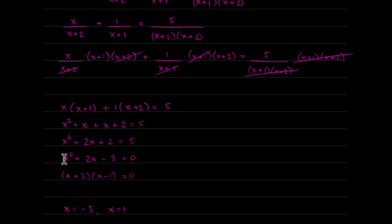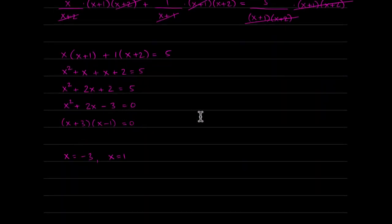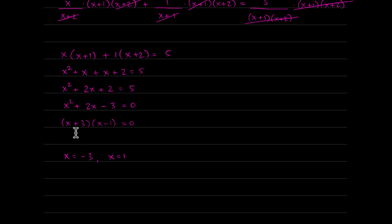There's no GCF; formulas don't apply because the signs don't match, but the leading coefficient is 1 so I can use the AC method directly. Looking for factors of negative 3 that add to positive 2: those are positive 3 and negative 1. By the zero product property, x can equal negative 3 or x equals 1.